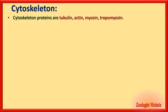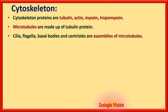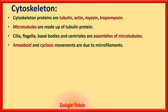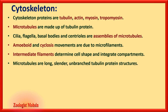The cytoskeleton is made of four important proteins: tubulin, actin, myosin, and tropomyosin. Microtubules are part of the cytoskeleton and are made up of tubulin proteins — this MCQ has been asked in past papers. Cilia, flagella, basal bodies, and centrioles are assemblies of microtubules. Amoeboid and cyclosis movements are due to microfilaments, while intermediate filaments determine cell shape and integrate compartments.